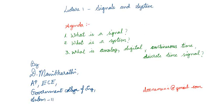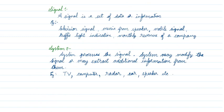Welcome to Lecture 1 on Signals and Systems. In this lecture, we are going to start with the basics of signals and systems — particularly what is a signal, what is a system, and what are the types of signals, such as analog signal, digital signal, continuous time signal, and discrete time signal.